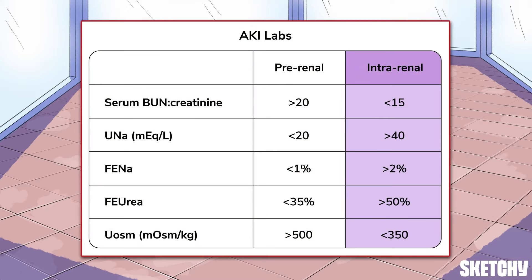As you recall from our intro to AKI video, serum and urine labs help distinguish pre-renal from intra-renal causes. Intra-renal damage means the kidneys can no longer appropriately hold on to sodium, water, and urea, leading to salty, watery urine and a low serum BUN to creatinine ratio, which is the opposite of what you see in pre-renal AKI.